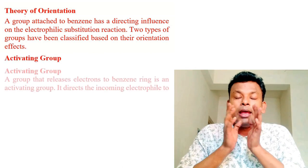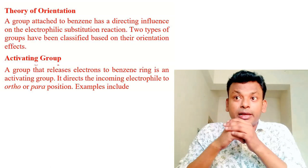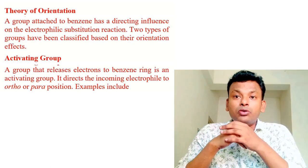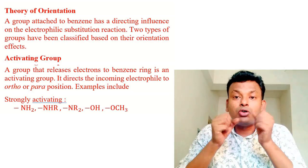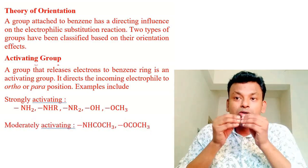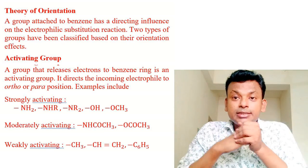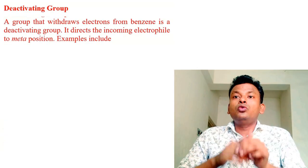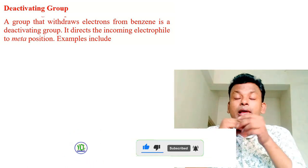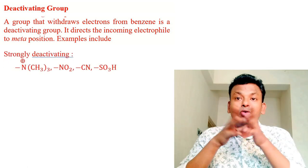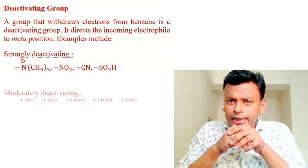Theory of orientation: a group attached to benzene has a directing influence on electrophilic substitution. Two types of groups are classified based on their orientation effect. First, activating groups: a group that releases electrons to the benzene ring is an activating group, and it directs the incoming electrophile to ortho and para positions. Examples of strongly activating groups include NH₂, NHR, NR₂, OH, OR. Moderately activating groups include NHCOCH₃, OCOR. Weekly activating groups include CH₃, CH=CH₂, and C₆H₅.